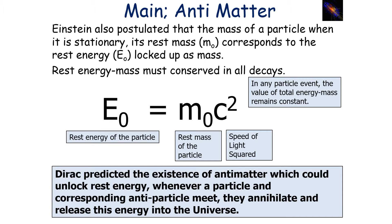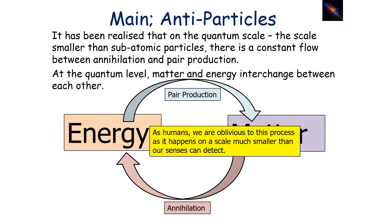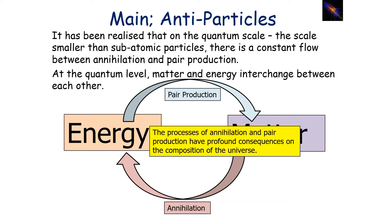Paul Dirac predicted the existence of antimatter, which could unlock this rest energy whenever a particle and its corresponding antiparticle met — they would annihilate and release energy into the universe. On a quantum scale, smaller than subatomic particles, there is a constant flow between matter and energy through annihilation and pair production. This constant cycling between energy and matter on the quantum scale is known as the quantum foam, and it has a profound consequence on the composition of the universe.